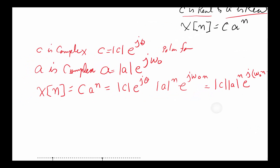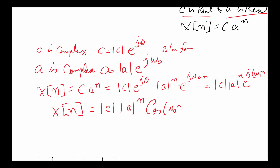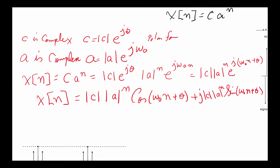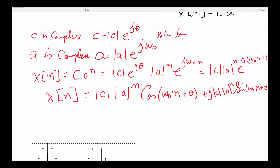Applying Euler's identity, we can write X of n as: the magnitude of C times the magnitude of a to the power n times cosine of (ω₀·n + θ), plus j times the magnitude of C times the magnitude of a to the power n times sine of (ω₀·n + θ).